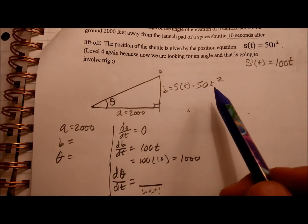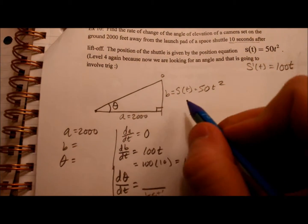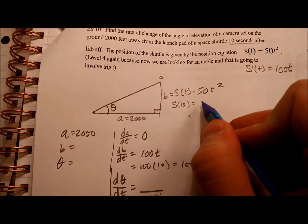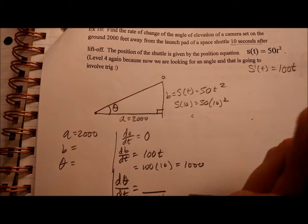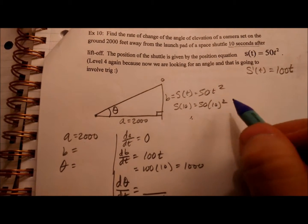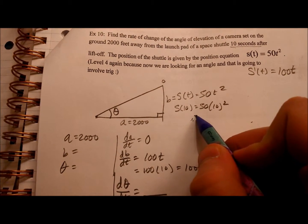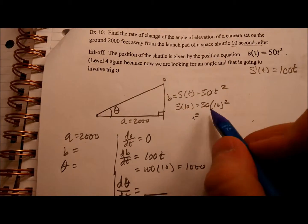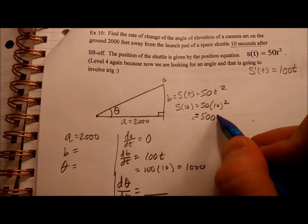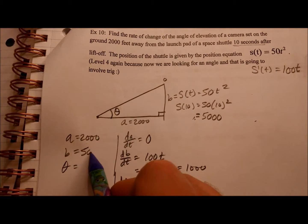Alright, so if I plug 10 seconds in here, that'll find it. So S of 10 is going to be 50 times 10 squared. My hand's shaking too much, it's shaking my lamp. Thank you lamp for providing me with light. Anyway, so it's 50 times 100. That's 50 with an extra two zeros. So B is 5,000.